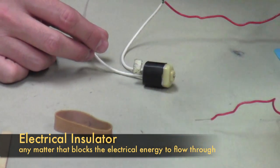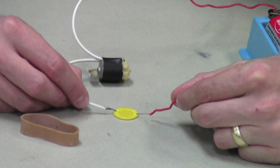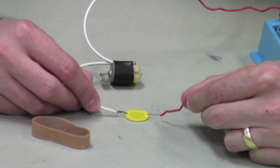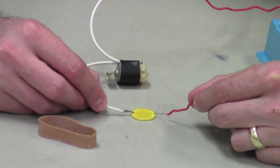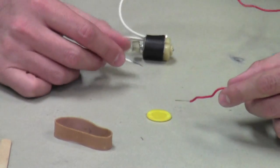For example, I have a plastic chip here. If I place the wires up on either side of it, you'll notice that the electrical energy is not flowing through and therefore the motor is not running. You can't see it or hear it because the electrical energy is being blocked by the plastic chip.